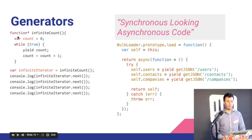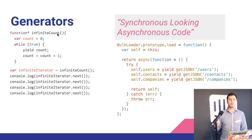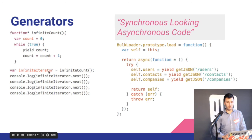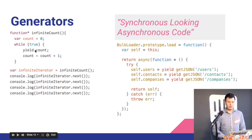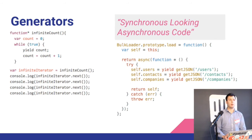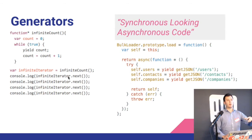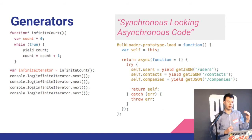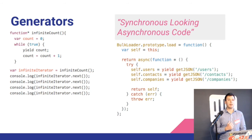We also have generators. A generator is a function with a star, and when you invoke it, it returns an iterator. You call the next method on the iterator. The interesting thing is that a 'while true' never-ending loop won't cause a stack overflow, because of the yield keyword. When you call next, execution stops at yield and exits the function. This breaks the way JavaScript used to work — normally when you start executing a function it goes all the way to the end with no way to stop it.